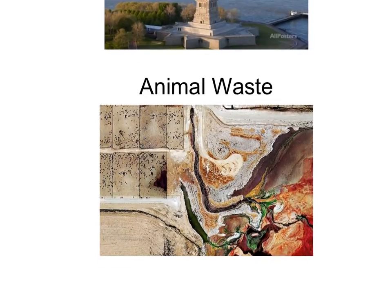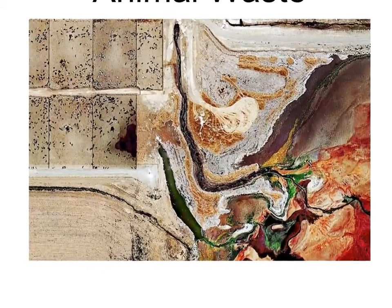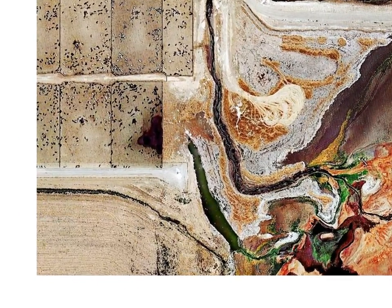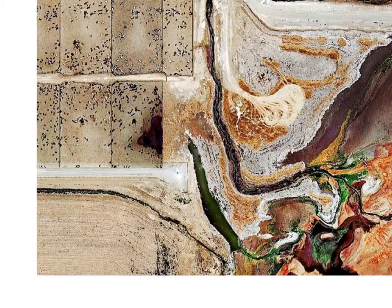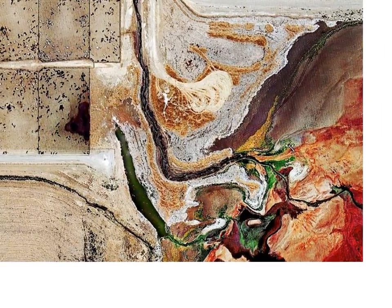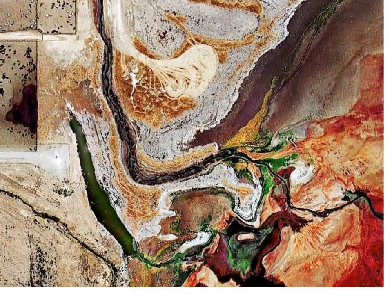Another problem we learned about was feedlots that produce a lot of concentrated waste. Here we're looking at a satellite image of one of those feedlots — here are the feedlots with the cattle — and we can see there's some runoff from those feedlots going into a nearby waterway. It looks pretty gross; that can't be good. That's a pretty dramatic example.